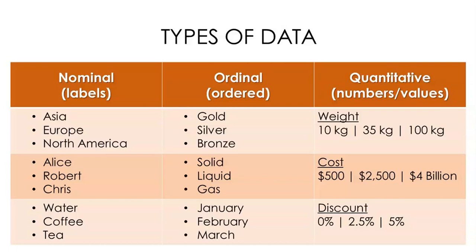Next is ordinal data — data points that can be put in a meaningful order, like months of the year or gold, silver, and bronze awards. Ordinal data points can be compared with a greater than or less than relationship. And finally, quantitative data — what we probably think of when we think of data. Quantitative data consists of numbers or values that can be plotted on an X or Y axis, and it can support arithmetic operations.